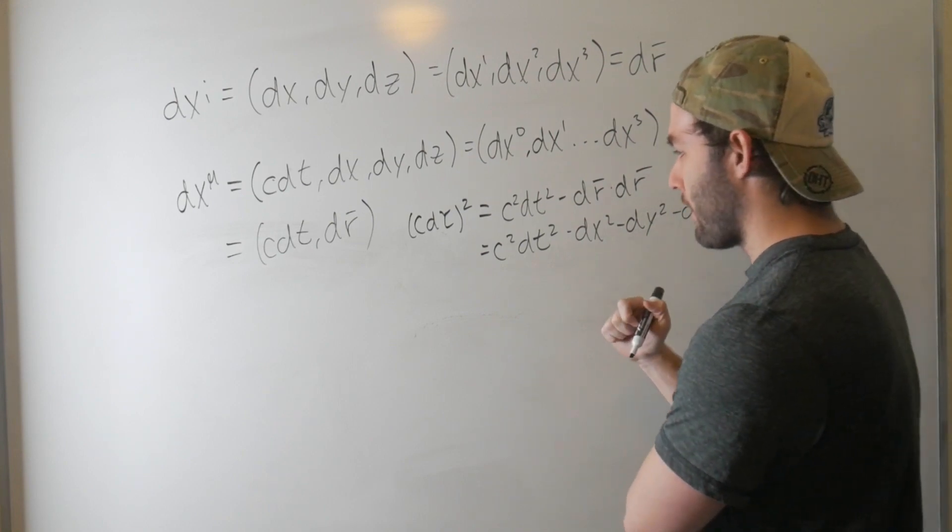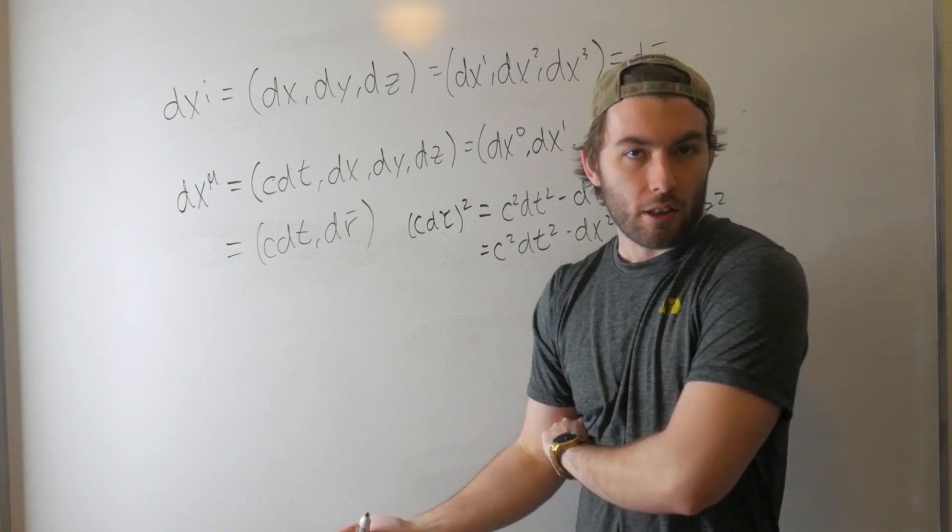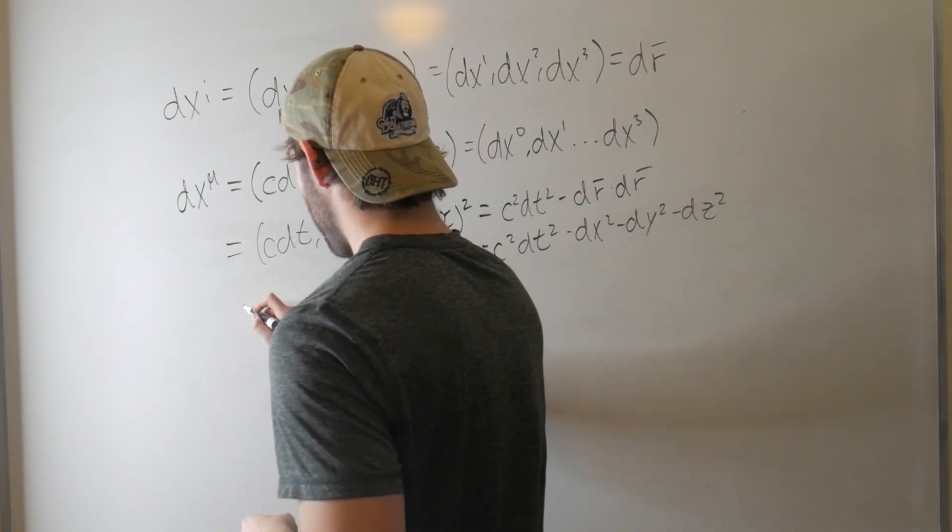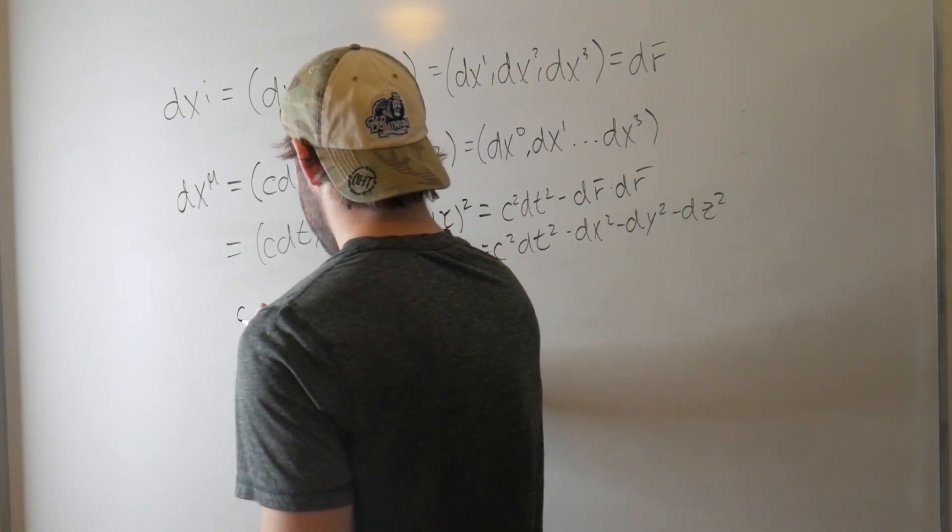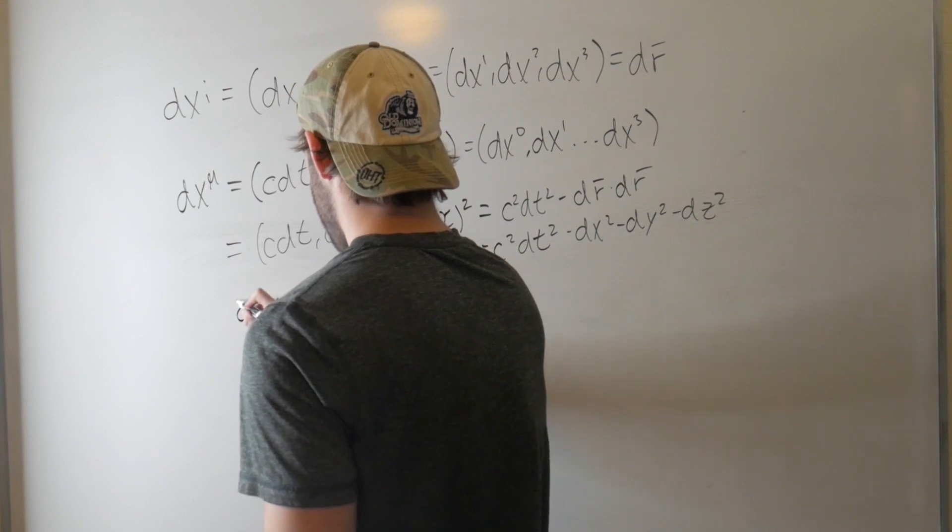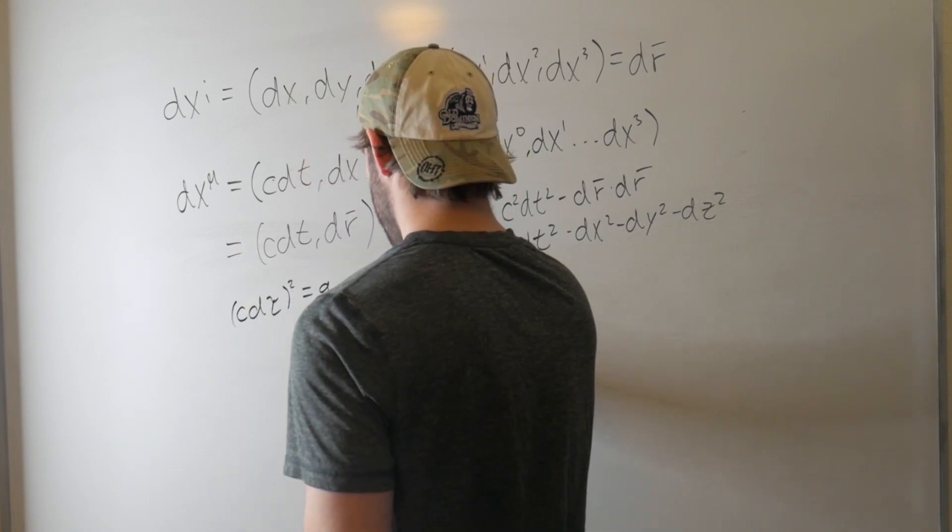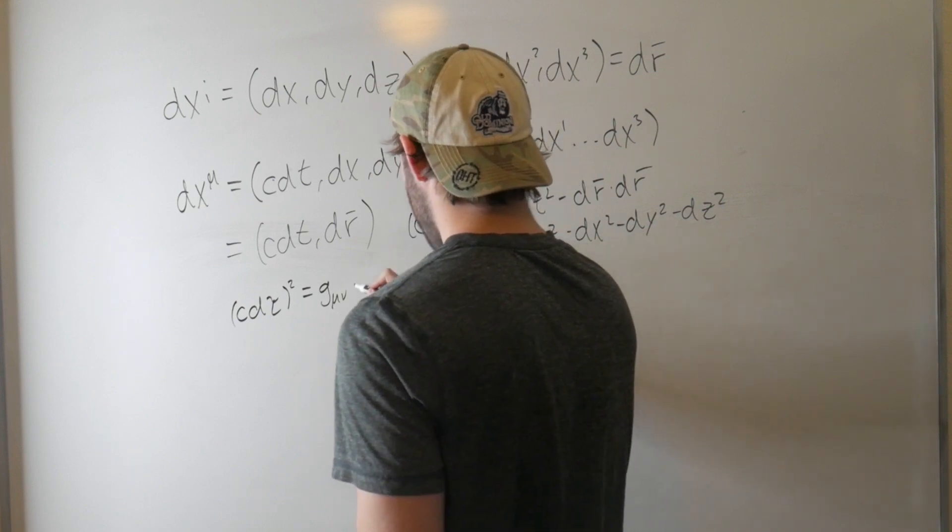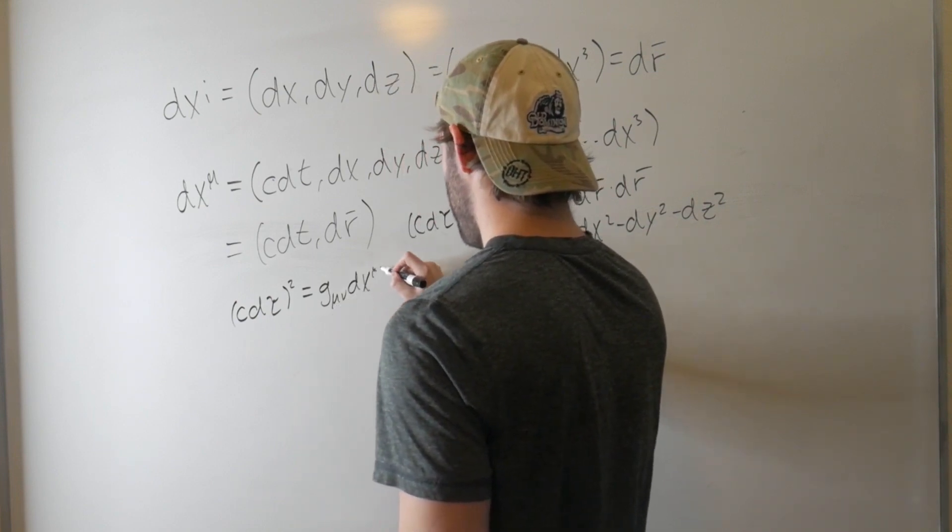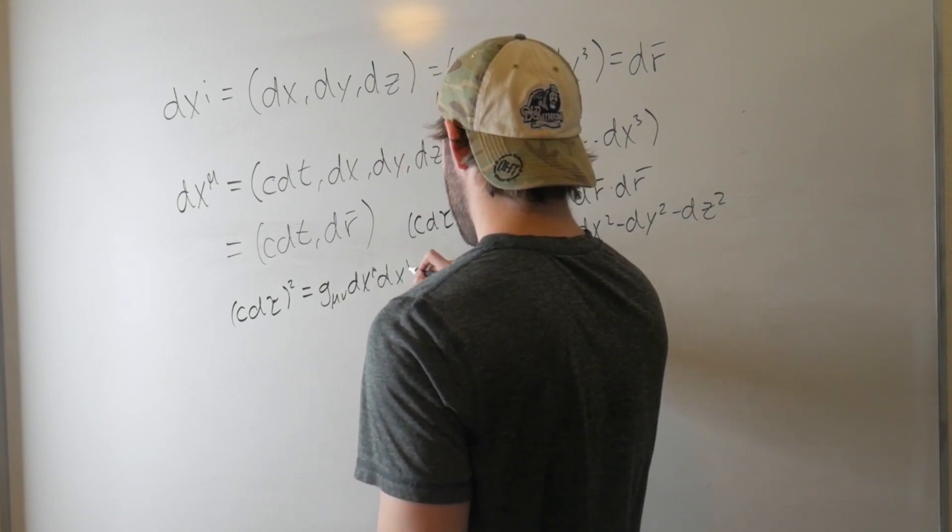Another question is, is there a way to express this in terms of the metric, like how we're familiar with it, so if we want to say, can I write c dτ² equal to g_μν times dx^μ dx^ν?